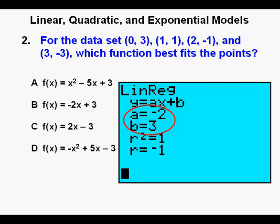We have Y equals negative 2x plus 3, and we see that equation in answer B, so we can circle our correct answer, B.